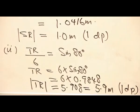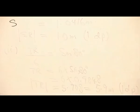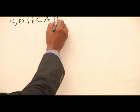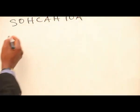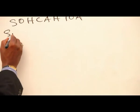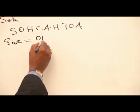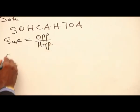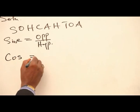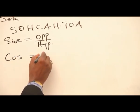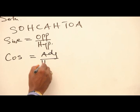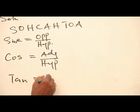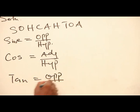Remember, SOHCAHTOA, a mnemonic standing for sin equal to opposite over hypotenuse, and standing for cos equal to adjacent over hypotenuse. And tan standing for opposite over adjacent.